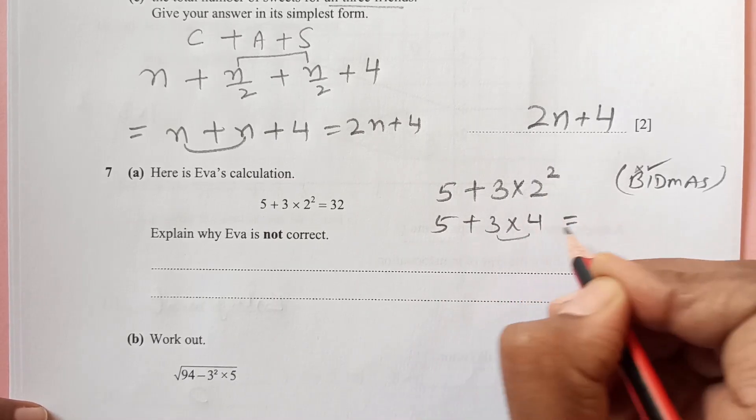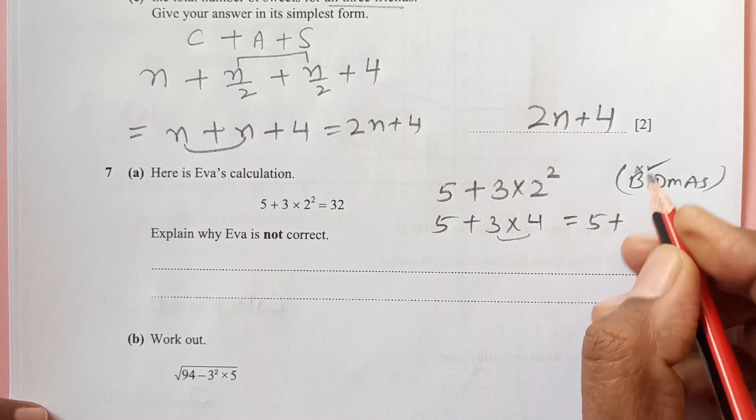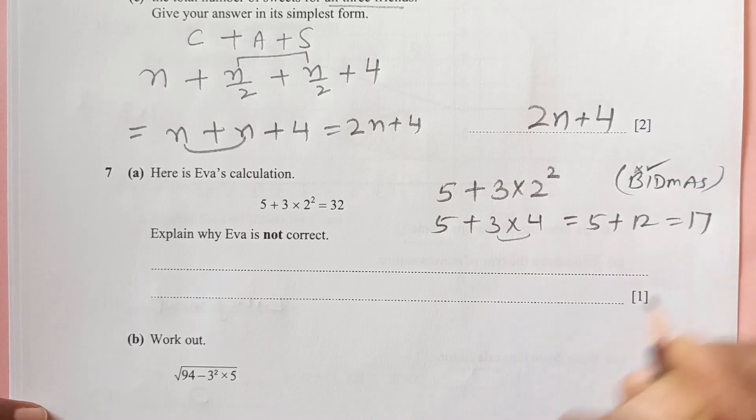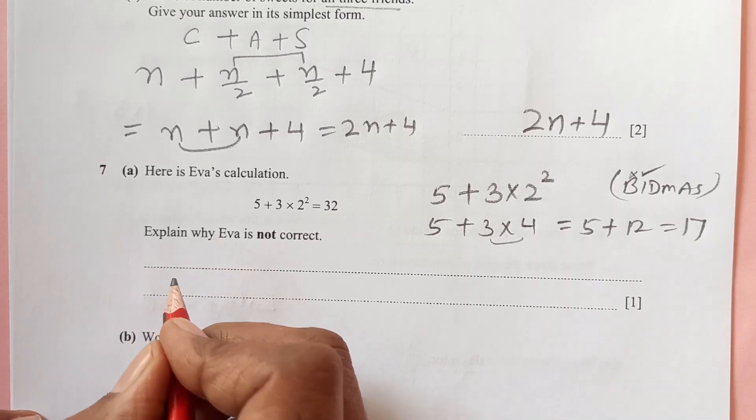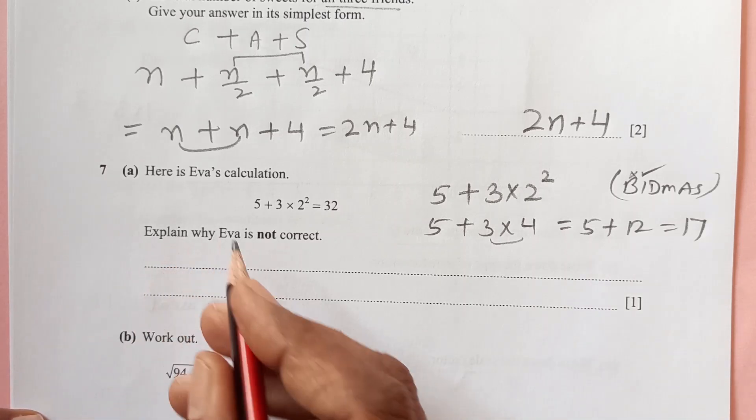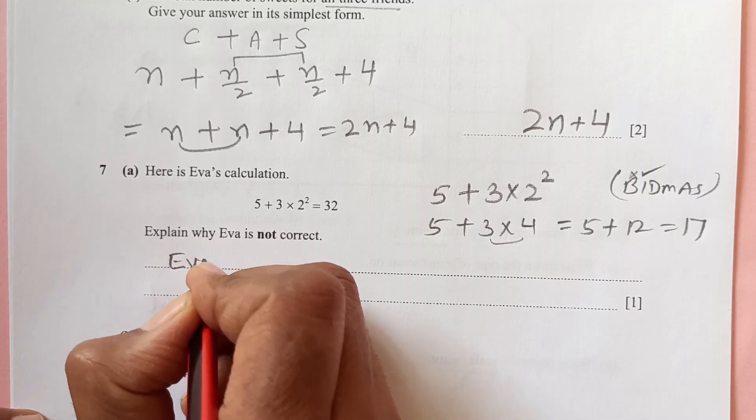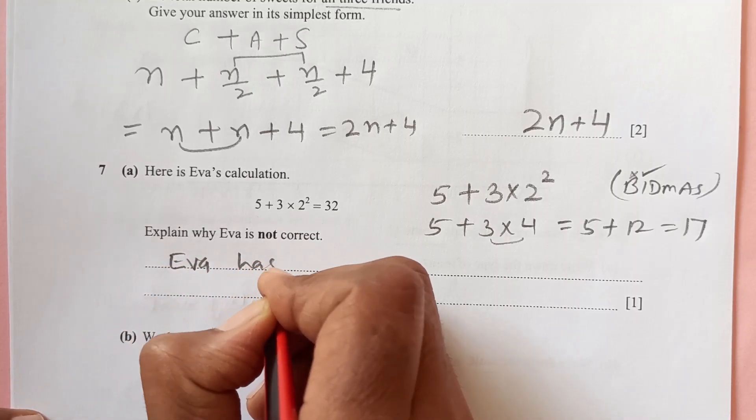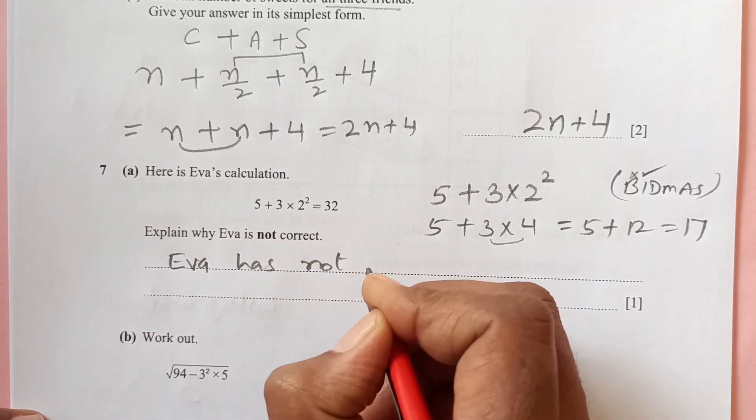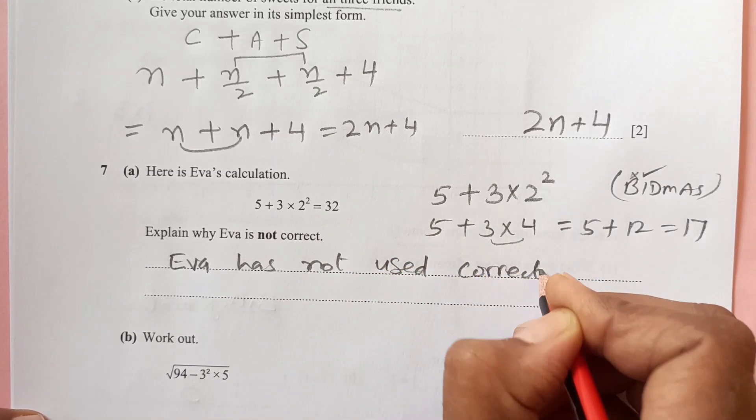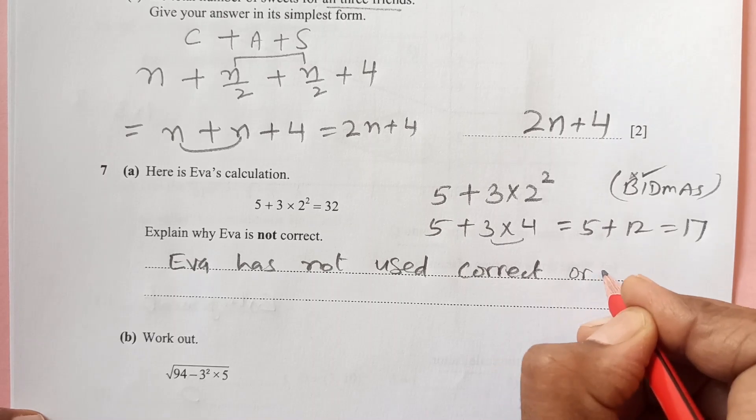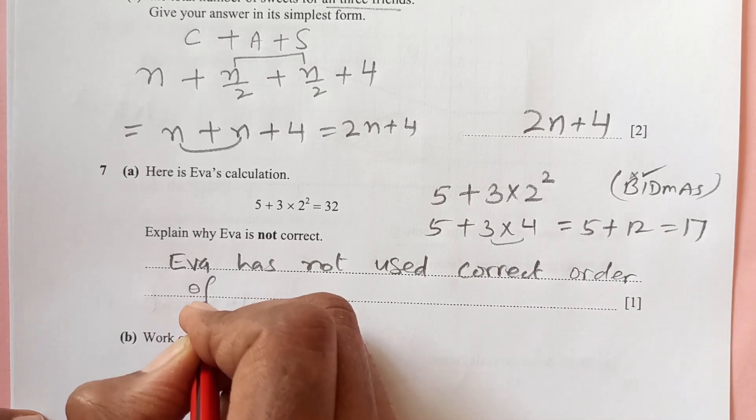Our answer is supposed to be 17, so that's not correct. What we can say is that Eva has not used correct order of operations. She just made the calculation, she has not used any order of operation with BIDMAS.